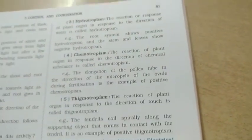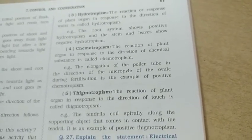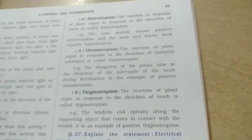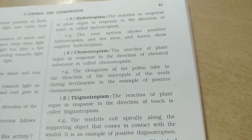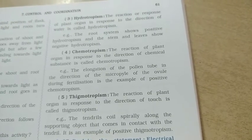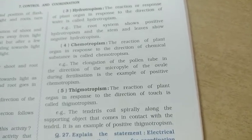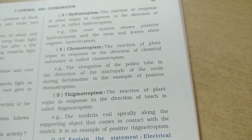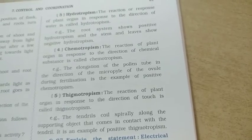The next type is thigmotropism. Whenever you touch a plant, the tropism that is the reaction of the plant organ in response to the direction of touch is called thigmotropism. The growth of the plant in the direction of touch is thigmotropism. An example is the tendril, which coils spirally around a supporting object that comes in contact with it — this is positive thigmotropism.